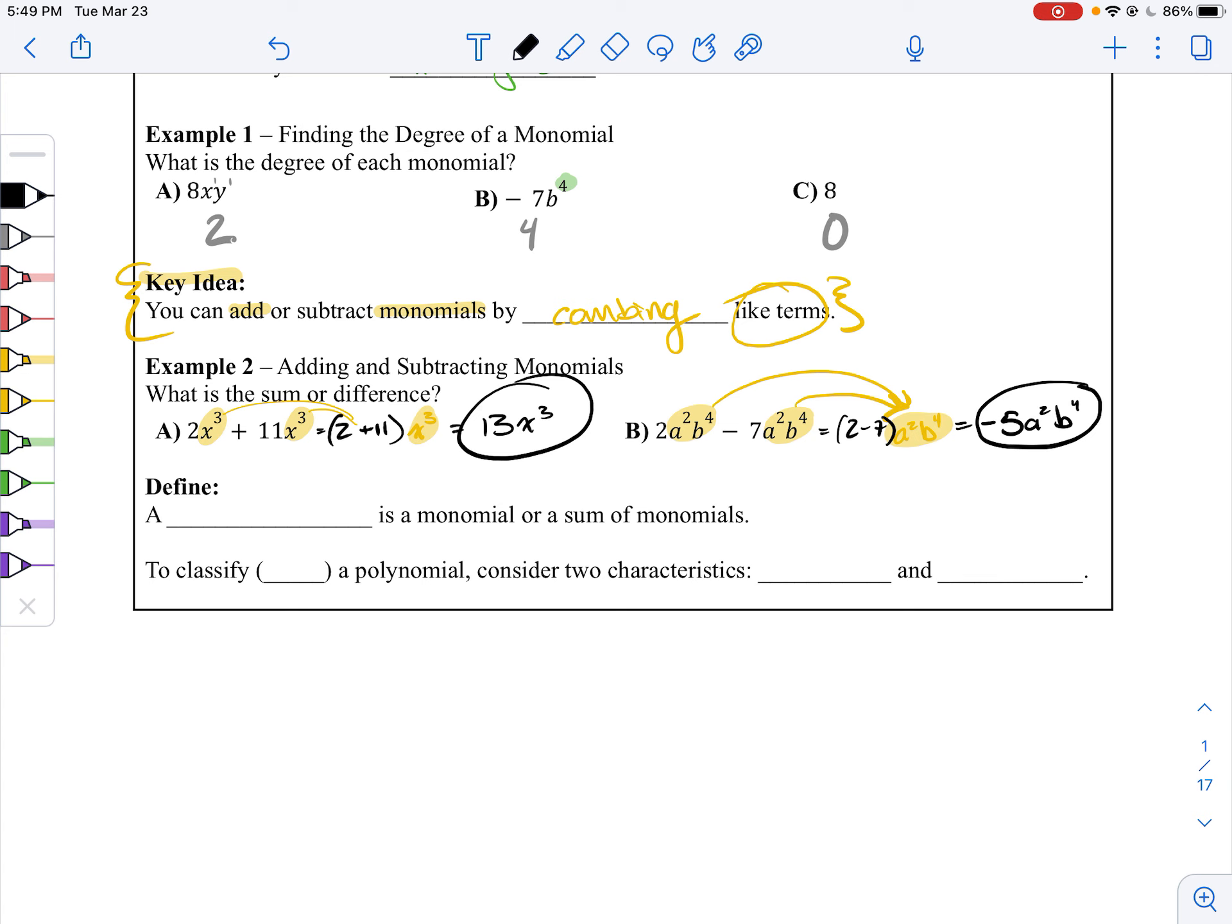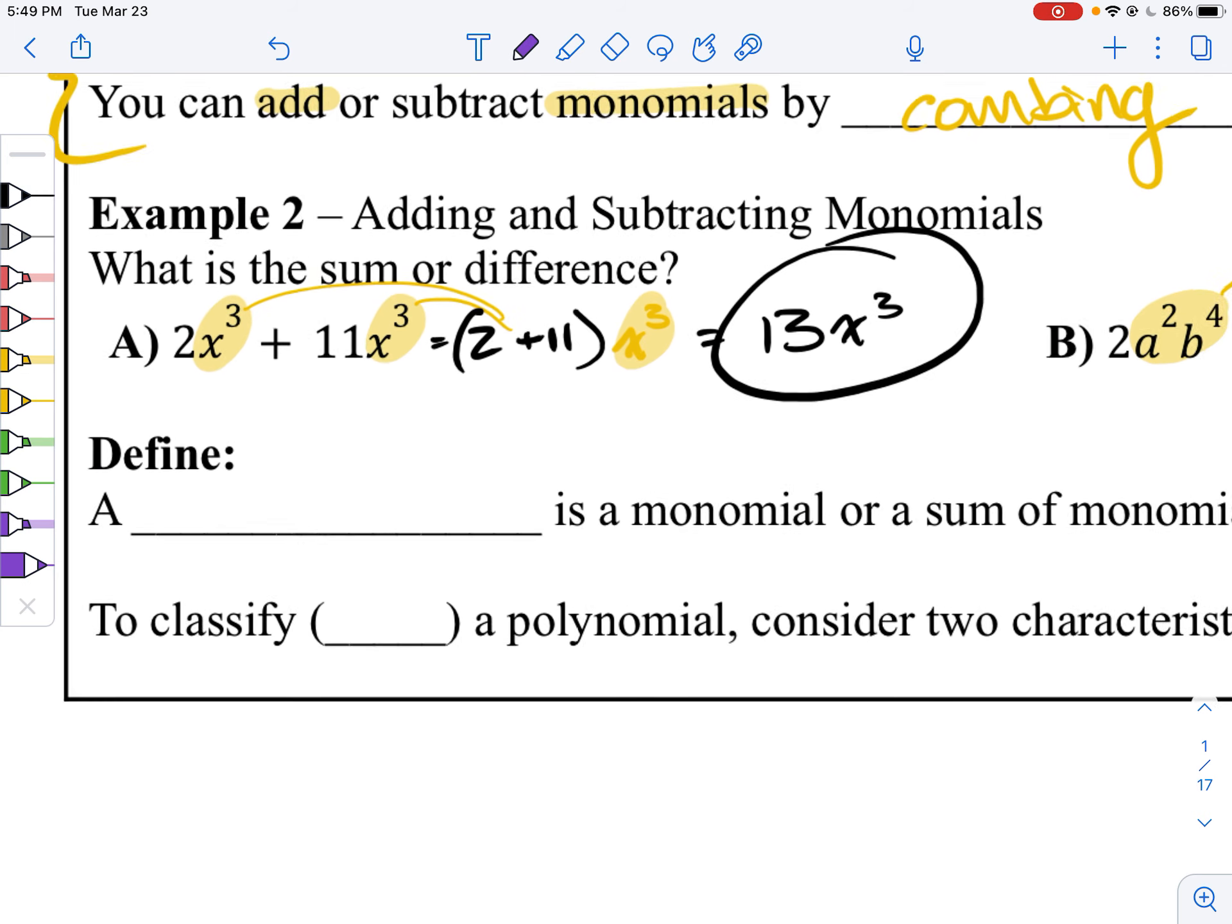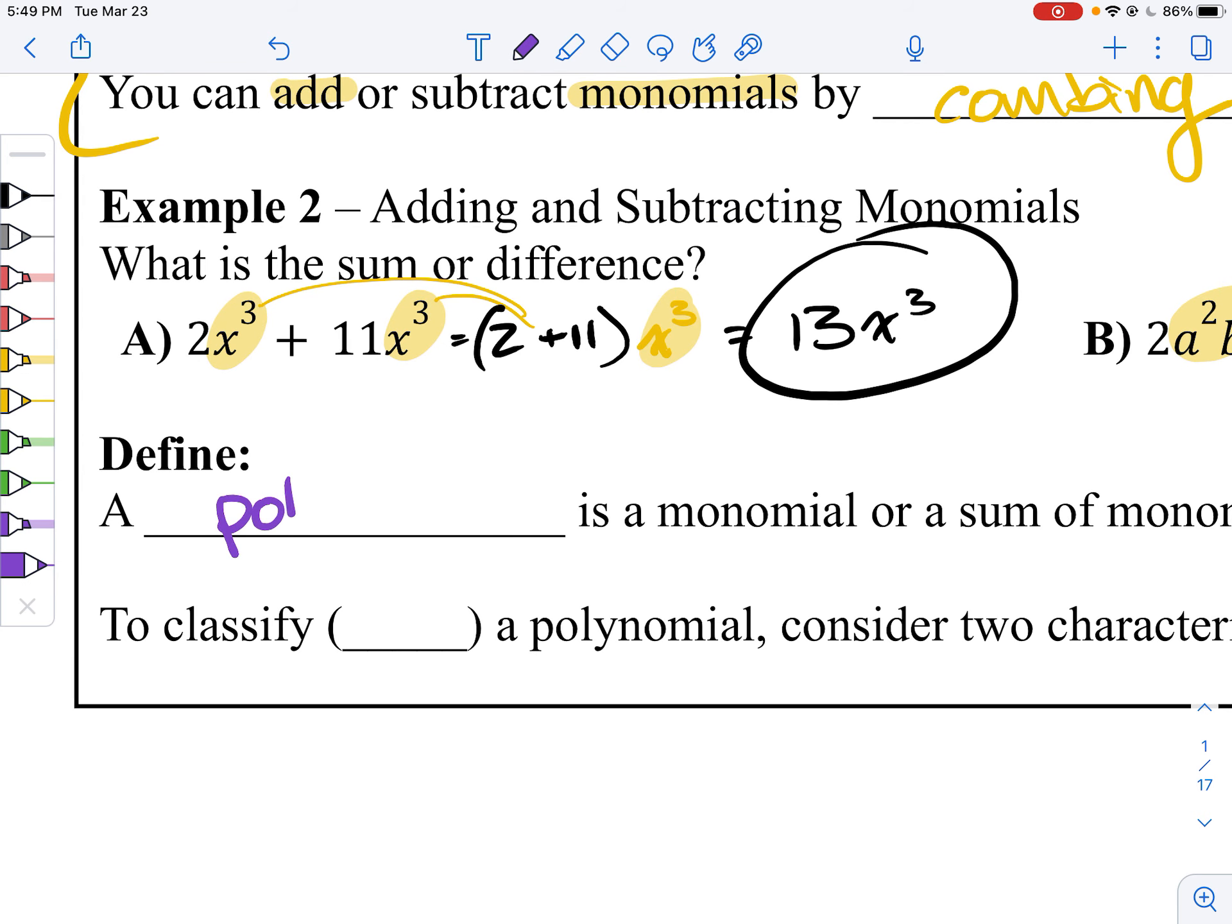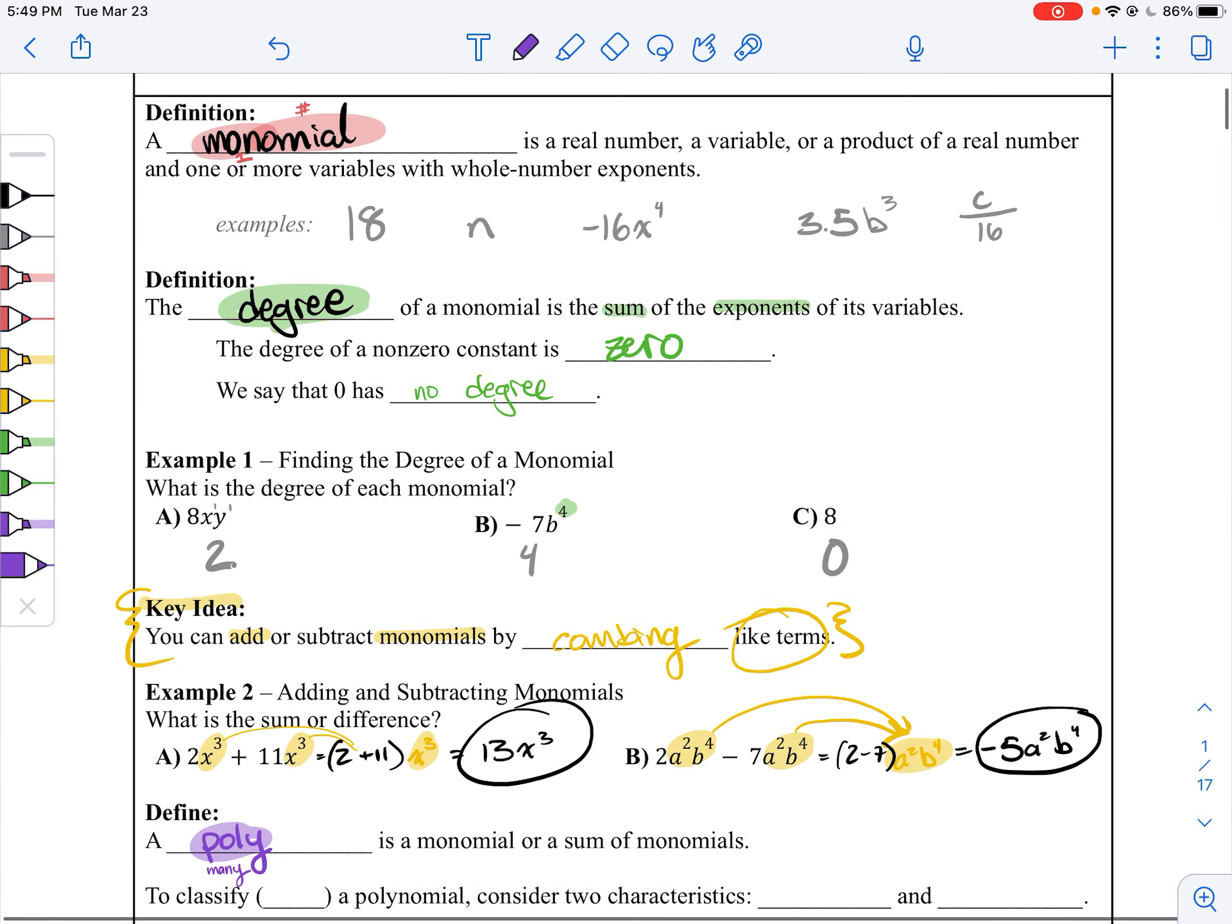I've been throwing around this term, no pun intended, of a polynomial. Poly means many. Like a polymer has many substances to it. Or a polygon has many sides.